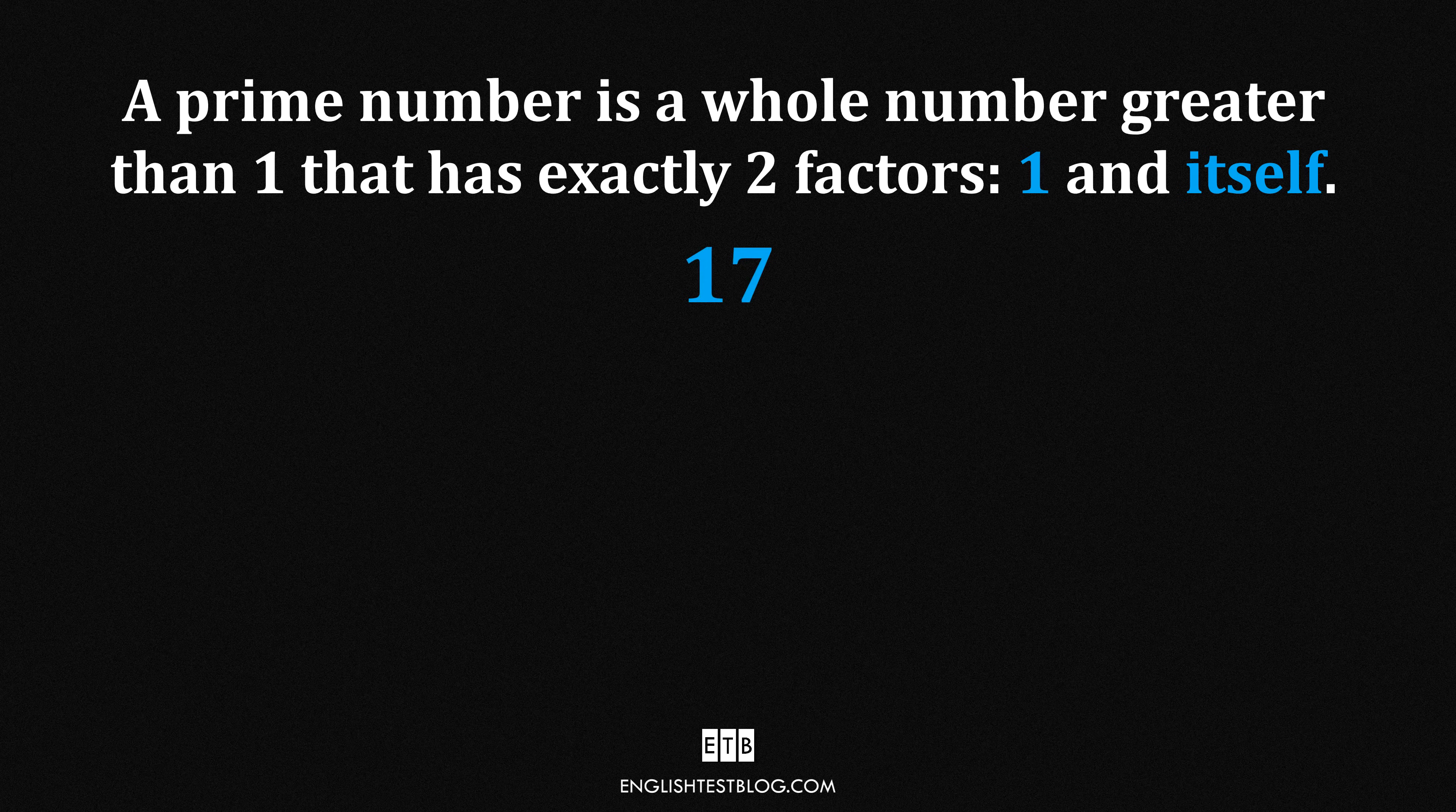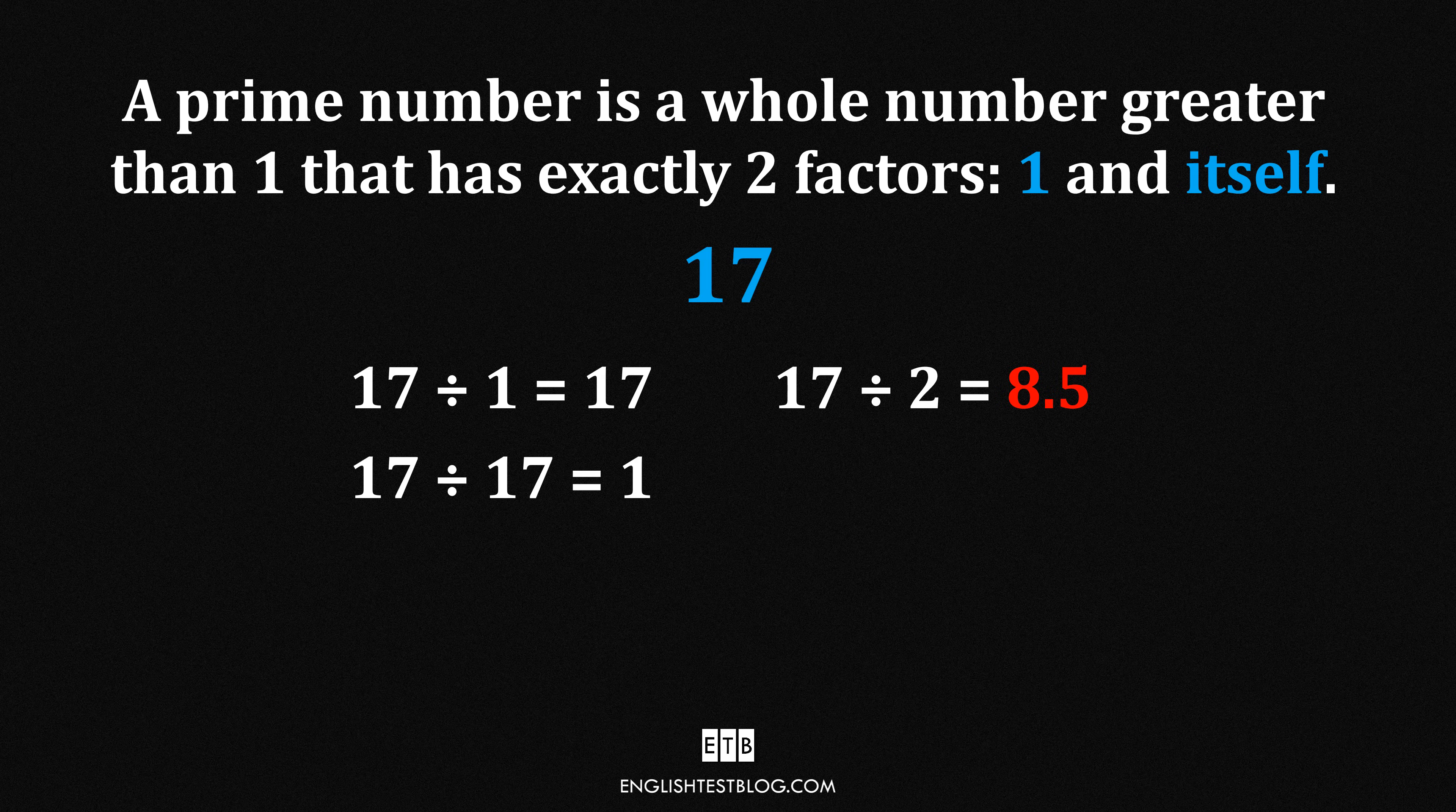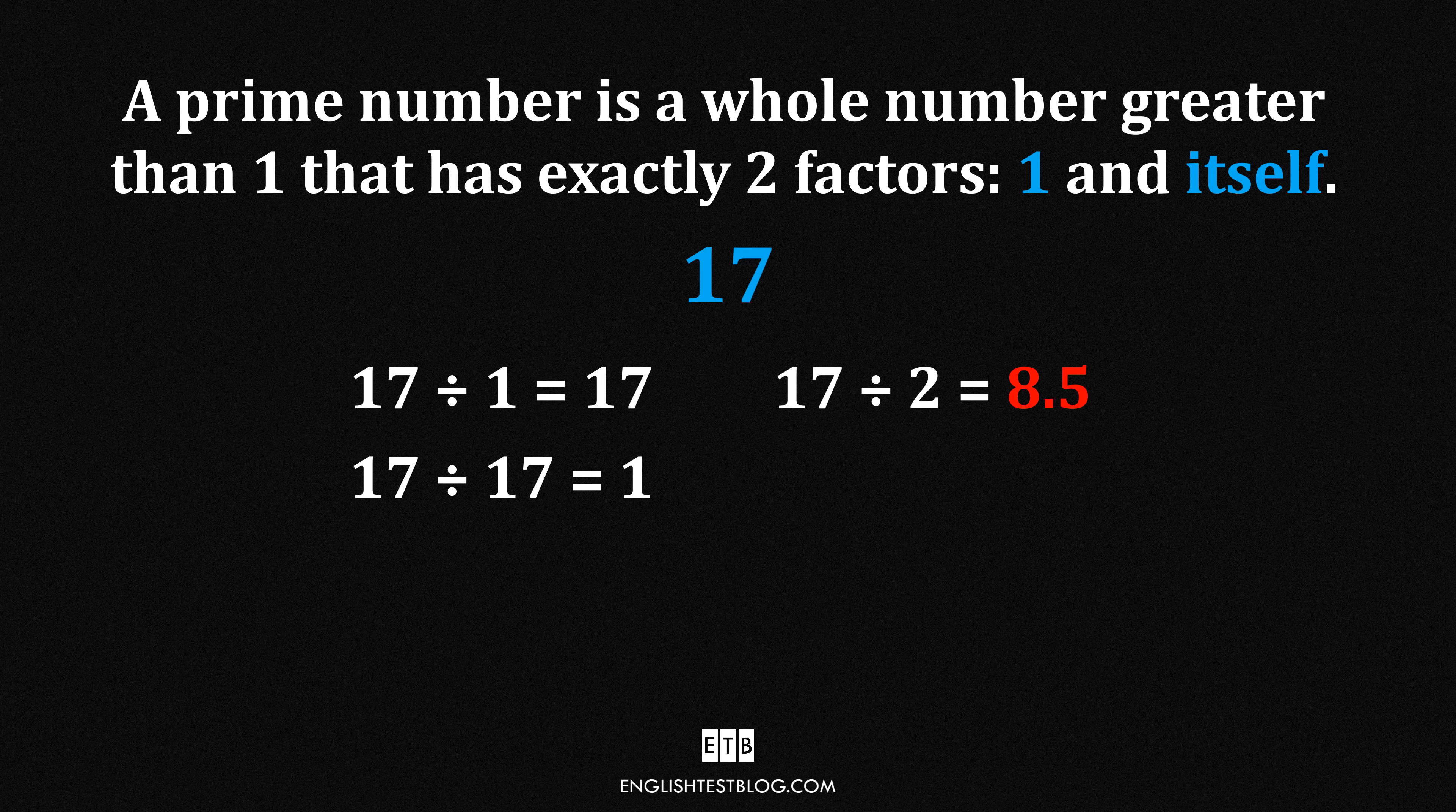Let's do one more. 17. 17 divided by 1 equals 17. 17 divided by 17 equals 1. What about 2? 8.5. Nope. 3? 5.66. Nope. 4? 4.25? Nope. Keep going up to 16. None work. Only 1 and 17. Two factors. Definitely prime.